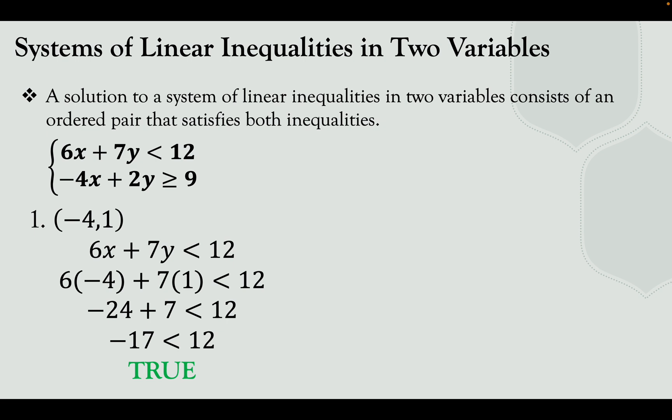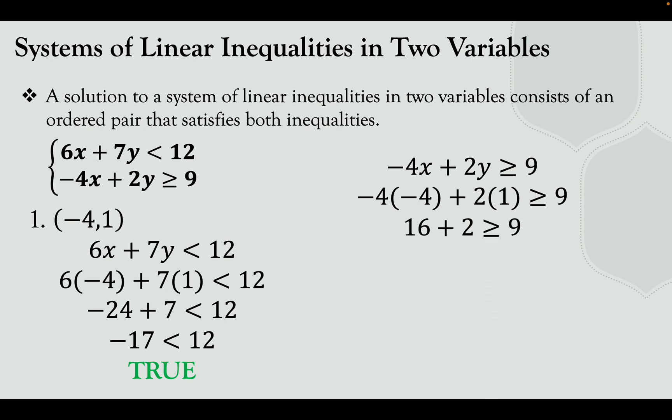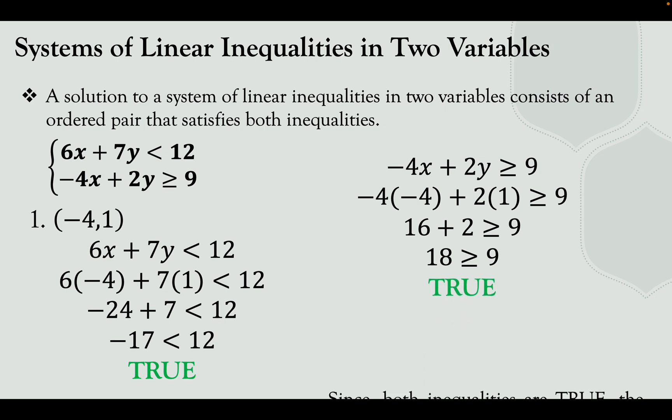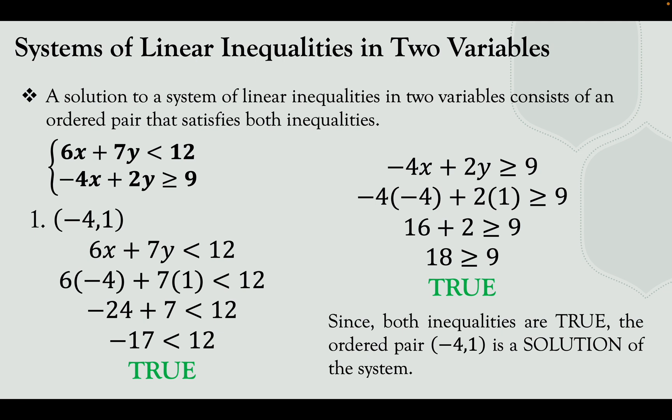Next, substitute negative 4 and 1 into the second inequality: negative 4 times negative 4 plus 2 times 1, greater than or equal to 9. That gives positive 16 plus 2, which is 18. Is 18 greater than or equal to 9? Yes, that is true. Since both inequalities are true, the ordered pair negative 4 and 1 is a solution of the system.